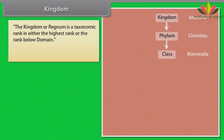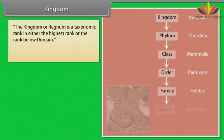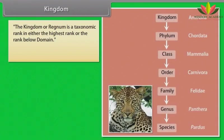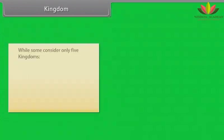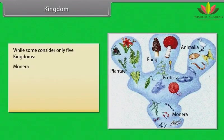Kingdom: The kingdom, or regnum, is a taxonomic rank either at the highest rank or the rank below domain. Each kingdom is divided into smaller groups called phyla. A system of six kingdoms includes Animalia, Plantae, Fungi, Protista, Archaebacteria, and Eubacteria. Some consider only five kingdoms: Monera, Protista, Fungi, Plantae, and Animalia.